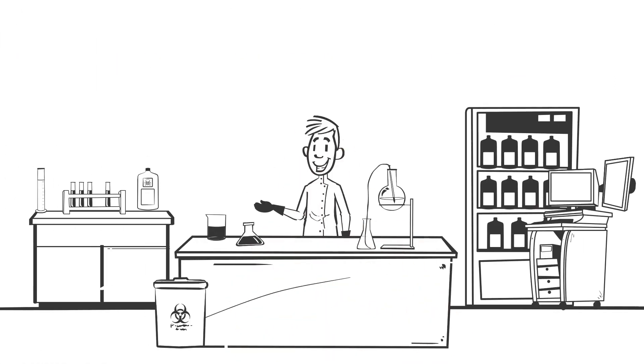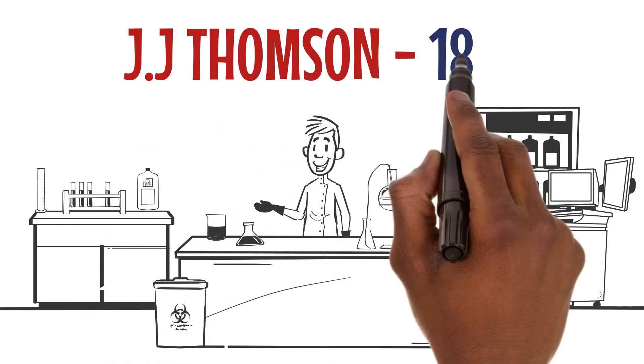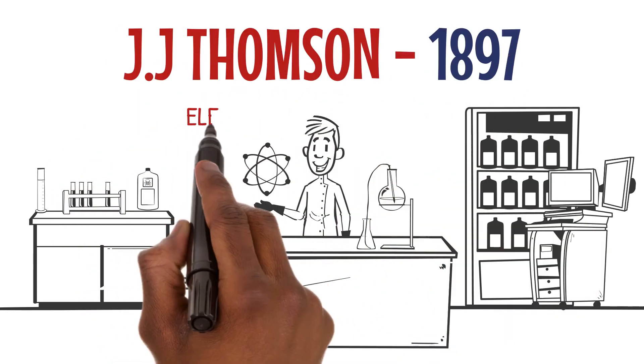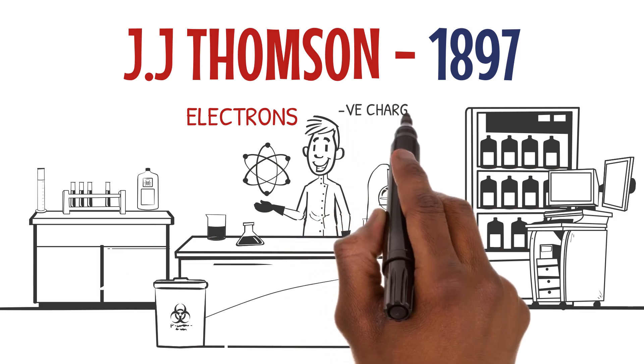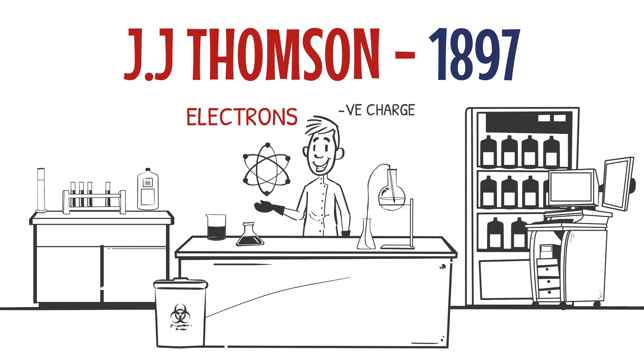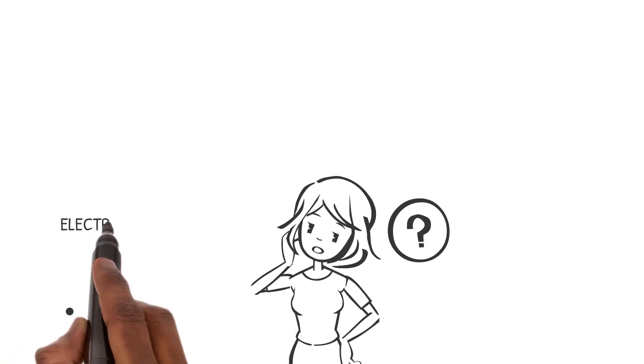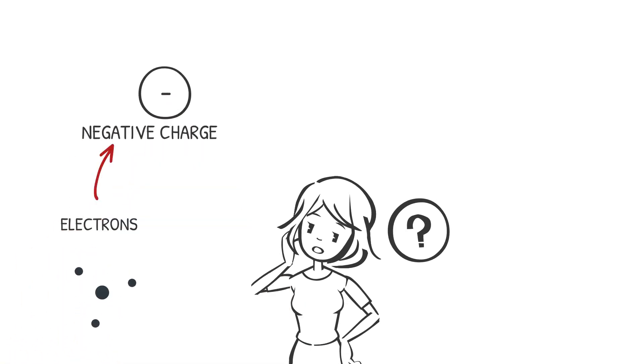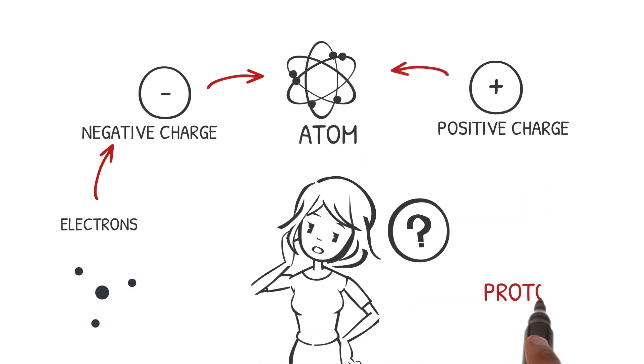Let's start our journey with a remarkable discovery made by J.J. Thomson in 1897. He found these tiny particles called electrons, which are negatively charged and much lighter than atoms themselves. But if electrons are negatively charged, what provides the positive charge in an atom? That's when the positively charged protons stepped in.